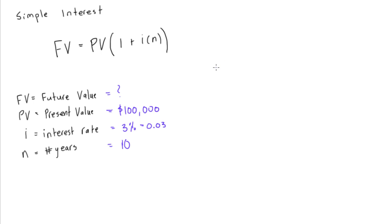So we can solve for this. Future value is going to equal $100,000 times 1 plus 0.03 times 10 years, right, the interest rate times the number of years.